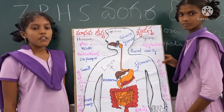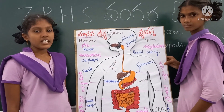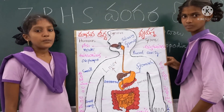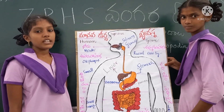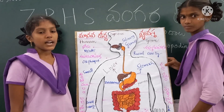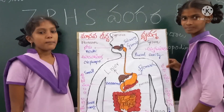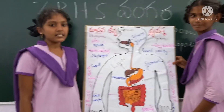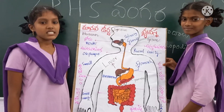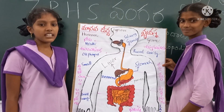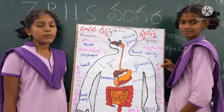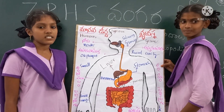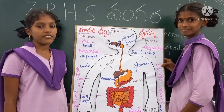Mouth: food is taken into the body through it and leads to the Buccal Cavity. Buccal Cavity contains the tongue, teeth, and secretions of Salivary Glands. Carbohydrate digestion starts here.